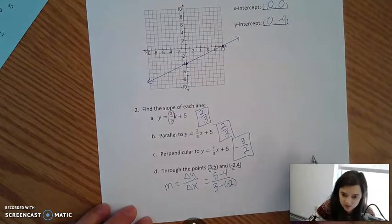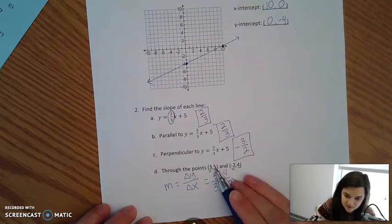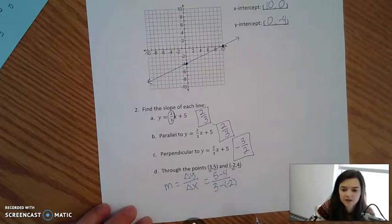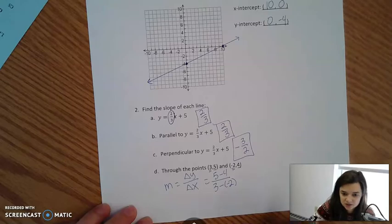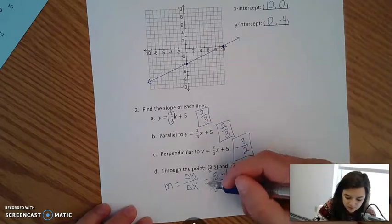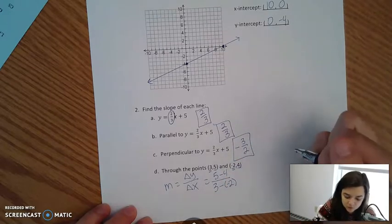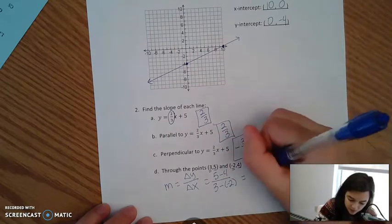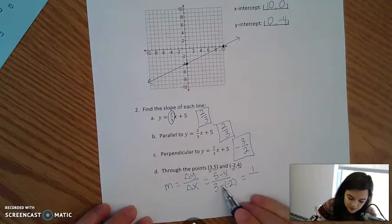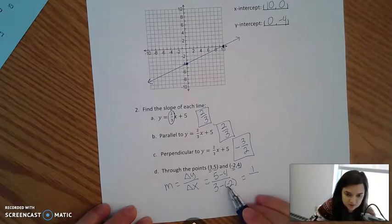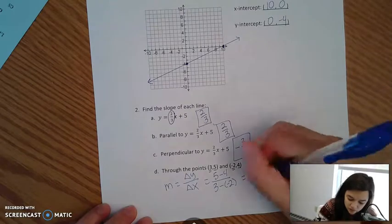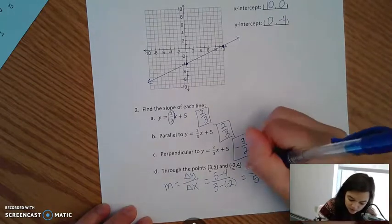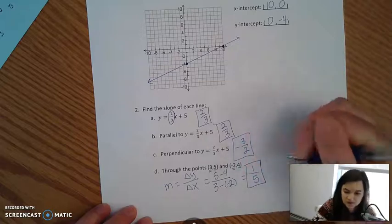You can certainly start with the other point. You could have done 4 minus 5 and negative 2 minus 3 as well. As long as you're consistent and you start with the same point each time, we should be fine. Then it's just simple. So 5 minus 4 is 1. 3 minus a negative 2, so minus negative, same thing as plus a positive. So 3 plus 2 is 5. So we have a slope of 1 over 5 or 1/5. And that's it.